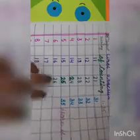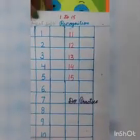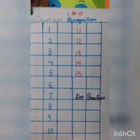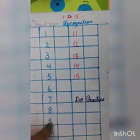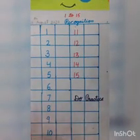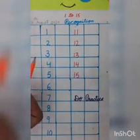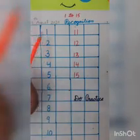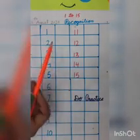But for recognition in your syllabus, there is only 1 to 15. You have to recognize the number 1 to 15. So watch it carefully. You have to recognize, ma'am will write the number and you have to recognize which number is this.